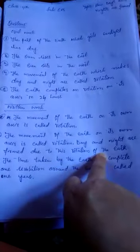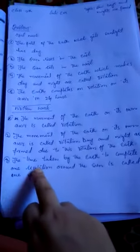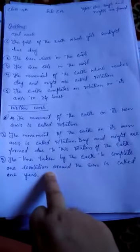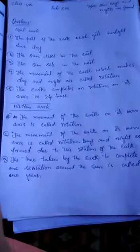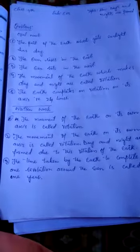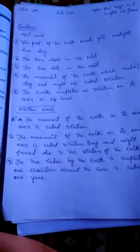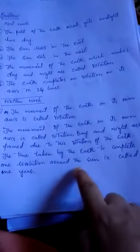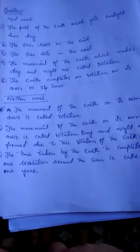What is one year? The time taken by the earth to complete one revolution - one revolution around the sun is called one year.